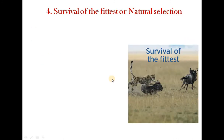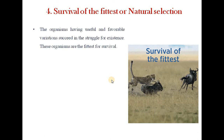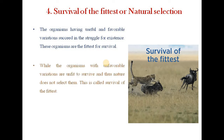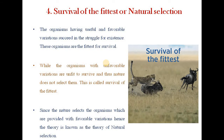The fourth principle is survival of the fittest or natural selection. The organisms having useful and favorable variations succeed in the struggle for existence — these organisms are the fittest for survival. While organisms with unfavorable variations are unfit to survive, and thus nature does not select them. This is called survival of the fittest, and since nature selects organisms with favorable variations, the theory is known as the theory of natural selection.